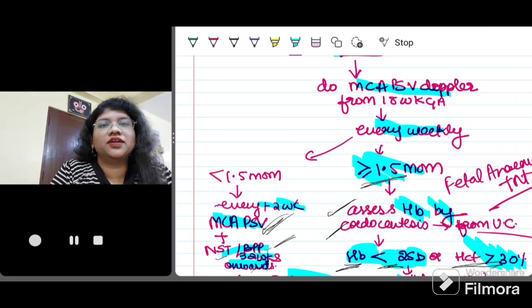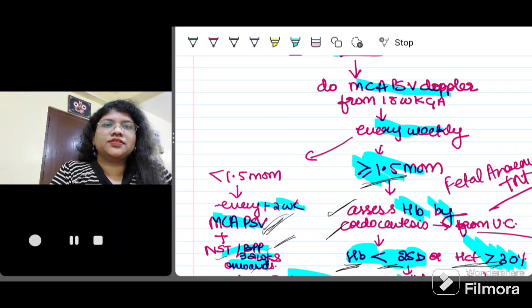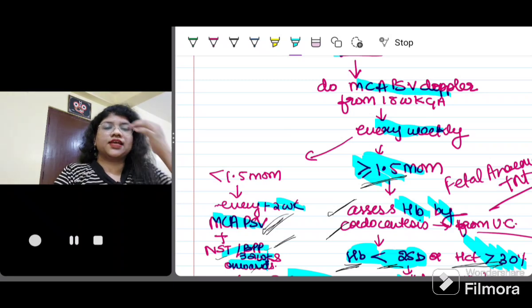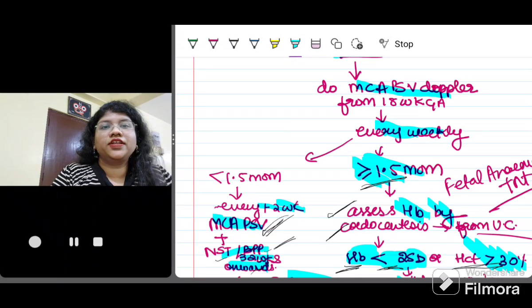And the second thing is the mirror syndrome or the Ballantyne syndrome. In this when there is fetal anemia, there is hypoxia in the fetus so there is placentomegaly. This leads to polyhydramnios and hypertension in pregnancy like condition in the mother that will cause ascites. When the baby is having hydrops and the mother is also having edema, polyhydramnios, so basically they are mimicking each other. This is known as the mirror syndrome.